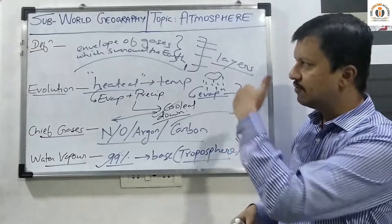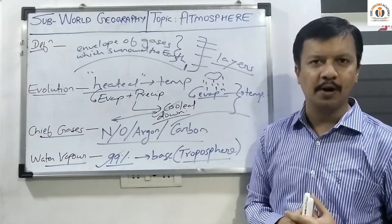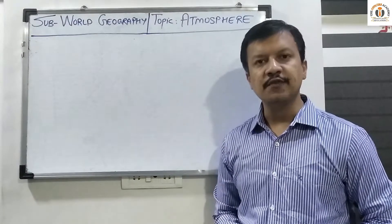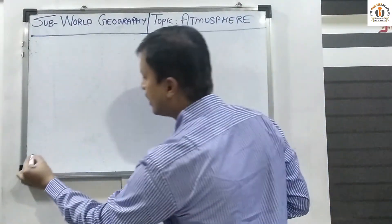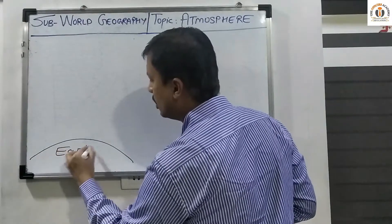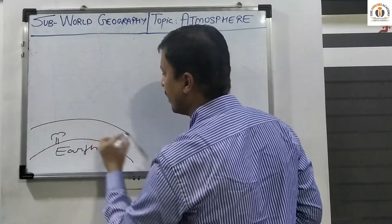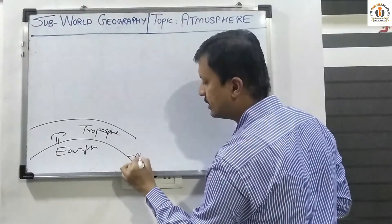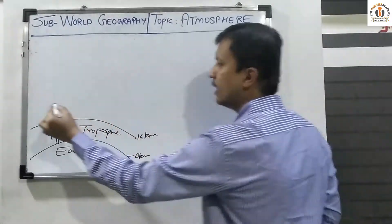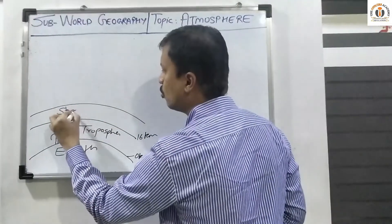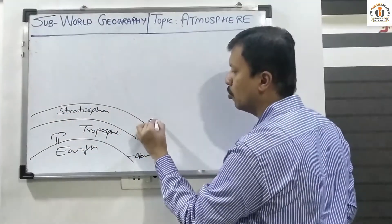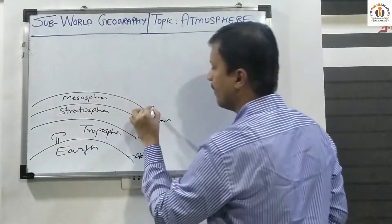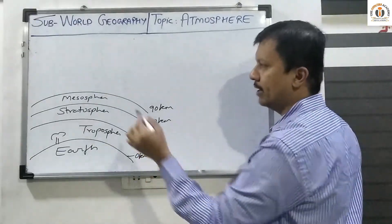Now we will study the classification of the different layers of the atmosphere and their principal properties. Starting from the surface of the earth: the first layer is the troposphere, which extends from 0 to 16 kilometers. The second layer is the stratosphere, which extends up to 50 kilometers. The third layer is the mesosphere, which extends up to 90 kilometers.